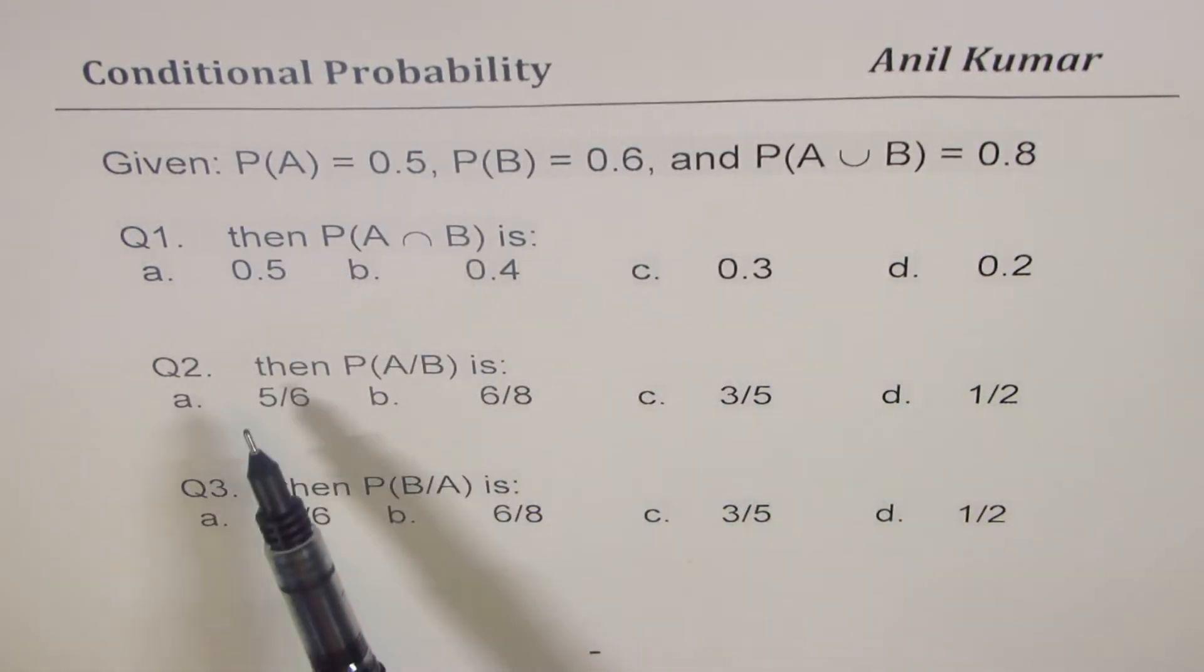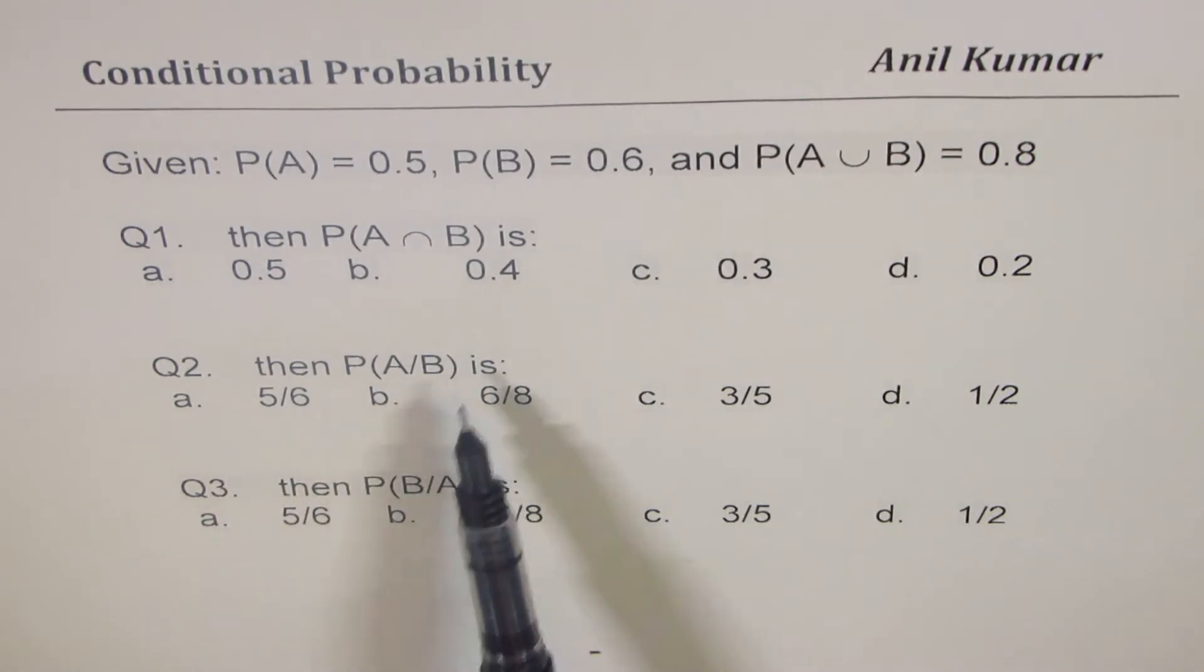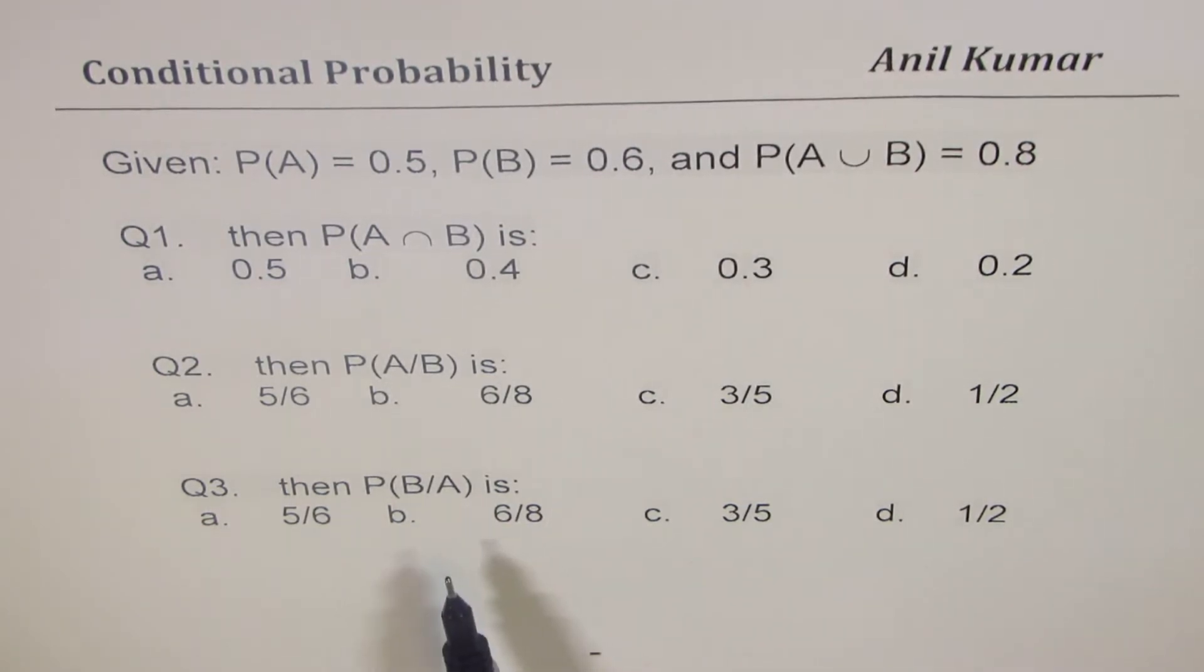In this particular situation you need to answer three questions. First, then the probability of A intersection B is what. Then the probability of A when B has occurred is what. And question number three is then the probability of B when A has happened is what. So that is the conditional probability. I'd like you to pause the video, answer the question, and then look into my suggestions.